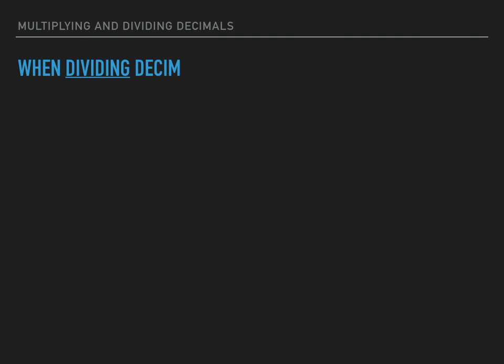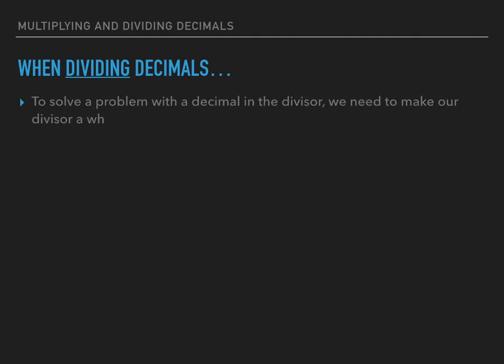Now when we get to dividing decimals, things get a little bit different. If we have a problem with a decimal in the divisor, we need to make that divisor a whole number. We cannot divide a number by a decimal. So we do the same as in our multiplication problems and move that decimal point to the right.